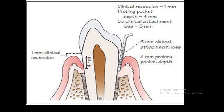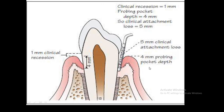The distance from the gingival margin to the base of the pocket is the probing pocket depth. When we place the probe here, it measures four millimeters. So now we have the clinical recession and the probing pocket depth. We add these two together — clinical recession plus probing depth — to give us the total attachment loss, which is five millimeters.